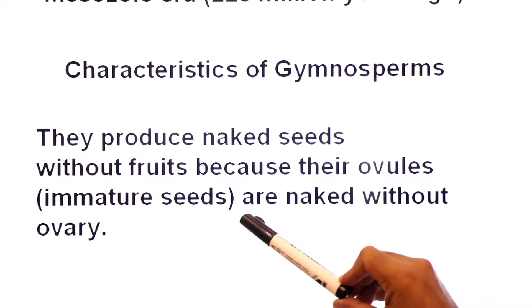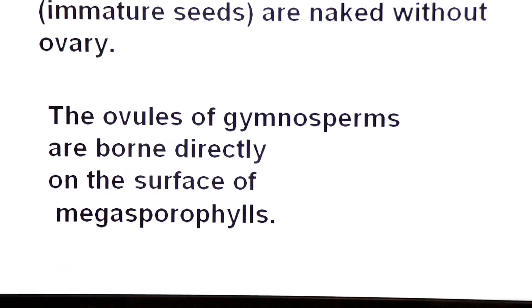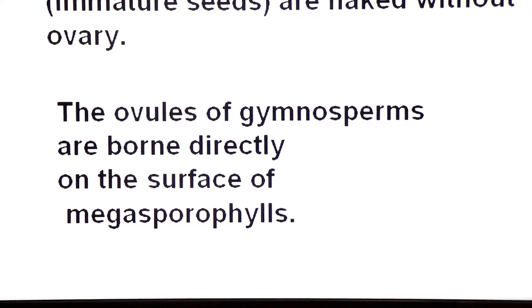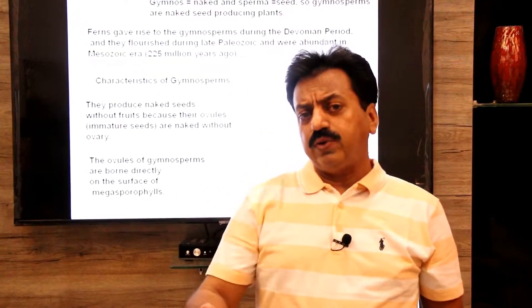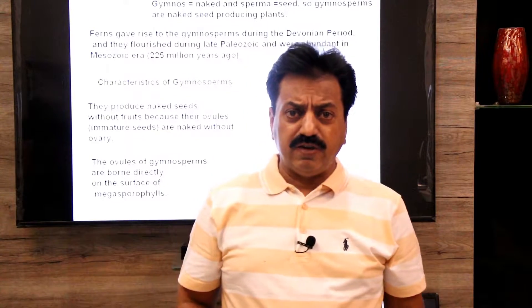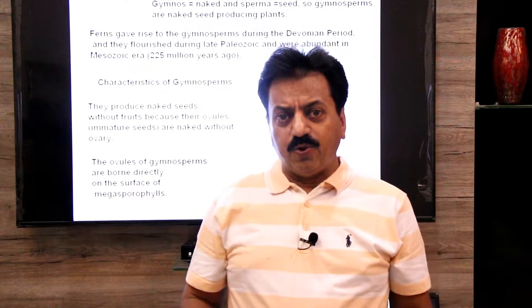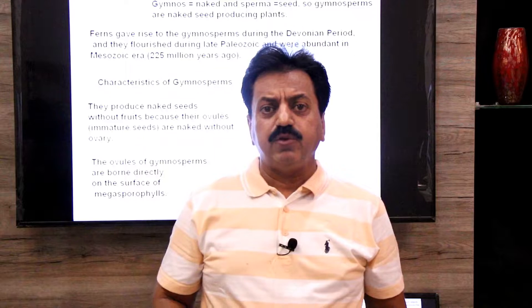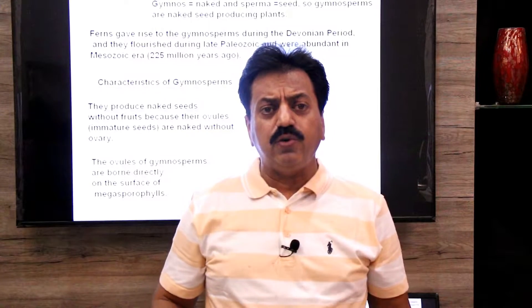Characteristics of gymnosperms: they produce naked seeds without fruits because their ovules (immature seeds) are naked without ovary. In mein jo ovules hain woh to hote hain magar ovaries absent hoti hain. The ovules of gymnosperms are borne directly on the surface of megasporophyll. In mein jo reproductive organs hote hain unko cones kehte hain. Jaise ke pinus ka example lein to ek hi plant pe male cone aur female cone dono present hote hain. Female cone is aggregation of megasporophylls. Megasporophyll pe megasporangia paye jate hain, aur ovules ke andar megasporangium hota hai. Nucellus mein ek megaspore mother cell hota hai jo aage female gametophyte mein convert ho jata hai. To in ke megasporophylls pe ovule naked position mein paye jate hain.